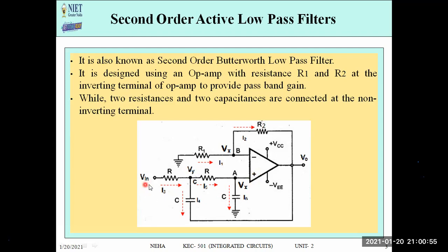At the non-inverting terminal we have the input, and two combinations of R and C. The currents flowing through these components are labeled I3 through I6 in the circuit diagram. Node A is labeled with potential VX. If the OPAMP is an ideal OPAMP, it follows the virtual short concept, meaning both terminals have the same potential VX. We have increased the combination of R and C, but the value of each resistor and each capacitor remains the same.